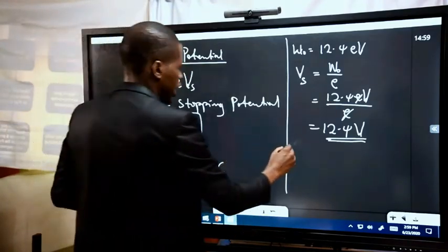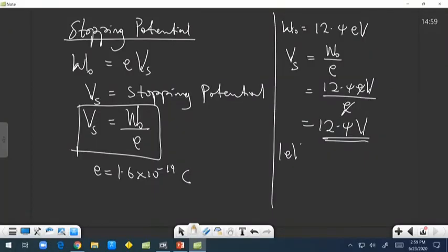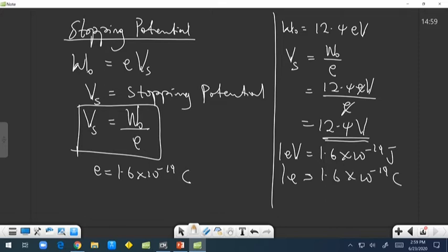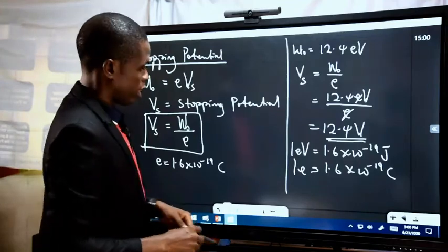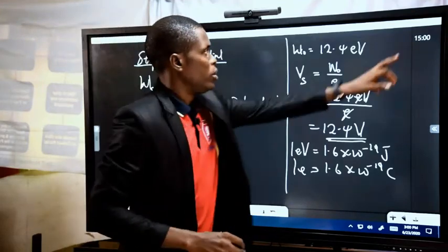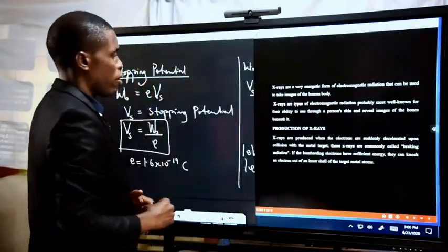Recall that 1 electron-volt = 1.6 × 10⁻¹⁹ joules, and the electronic charge is 1.6 × 10⁻¹⁹ coulombs. We can use that relationship to solve for the stopping potential when given the work function.